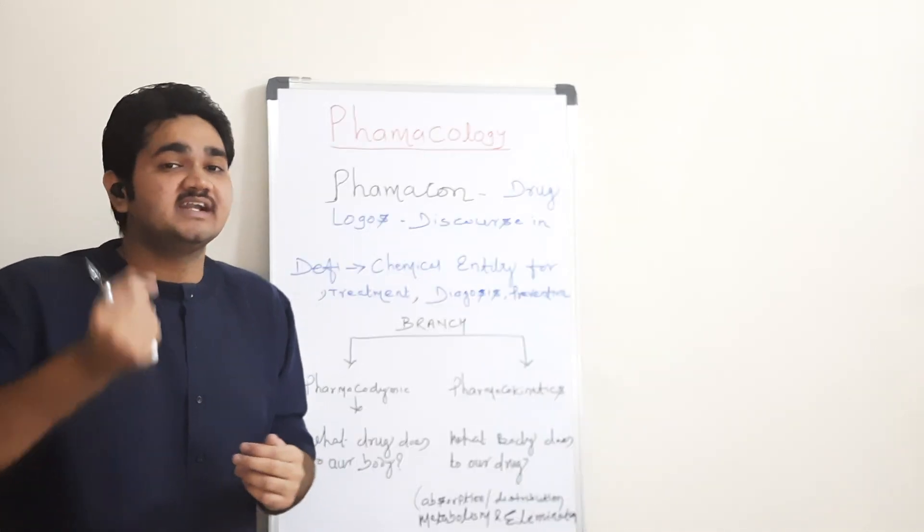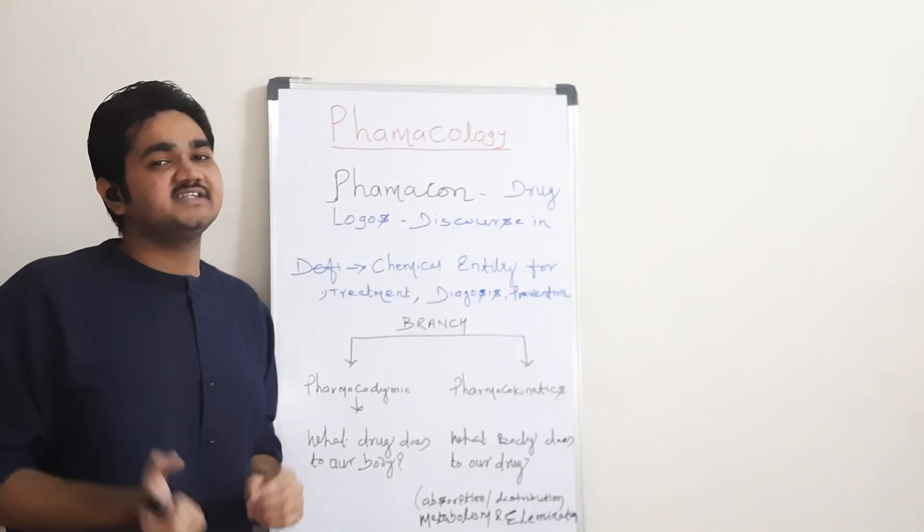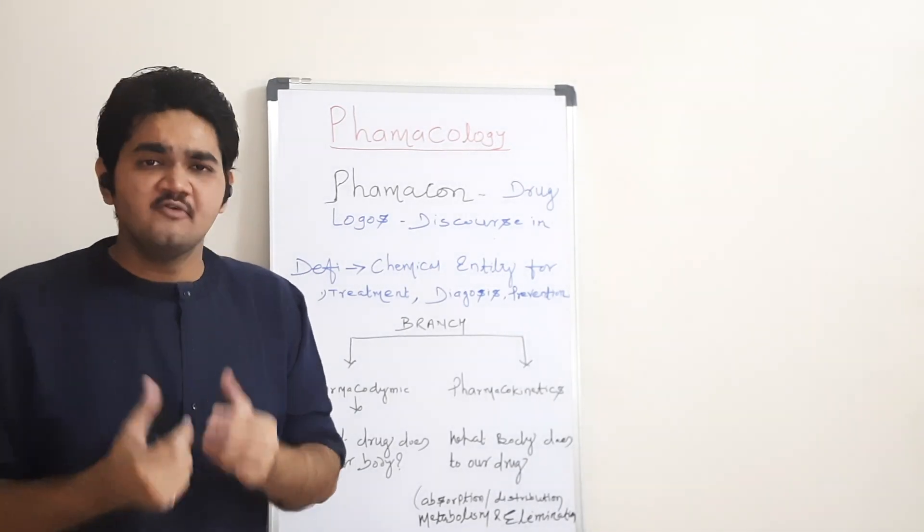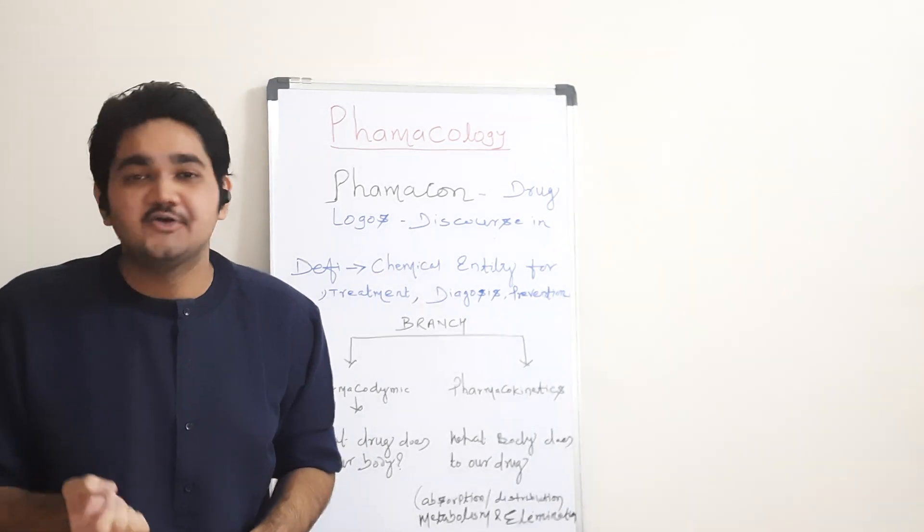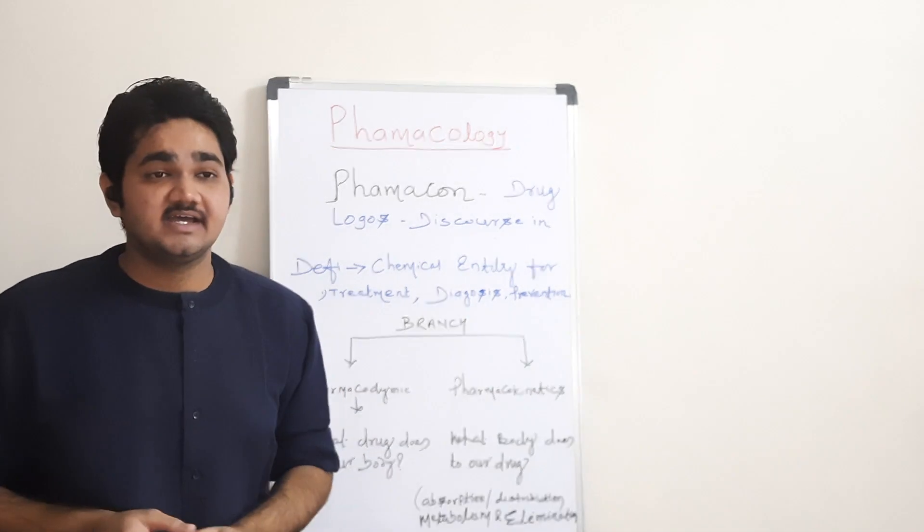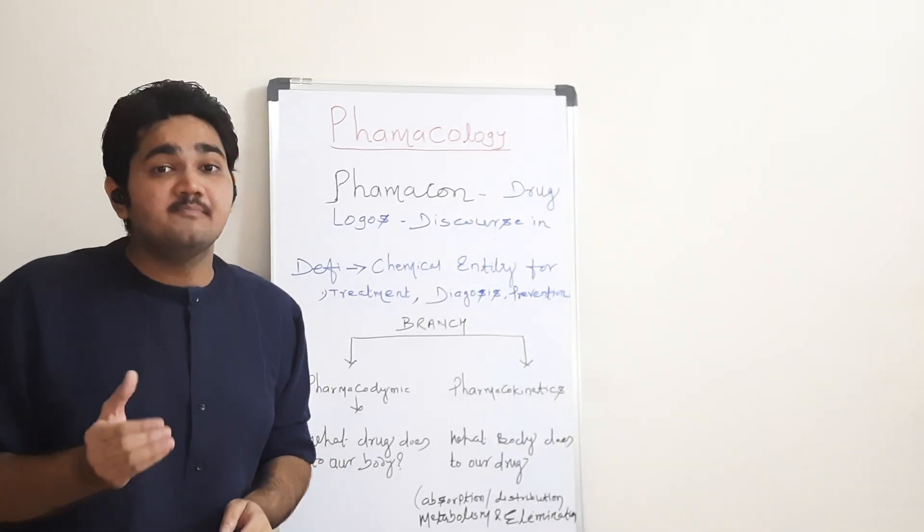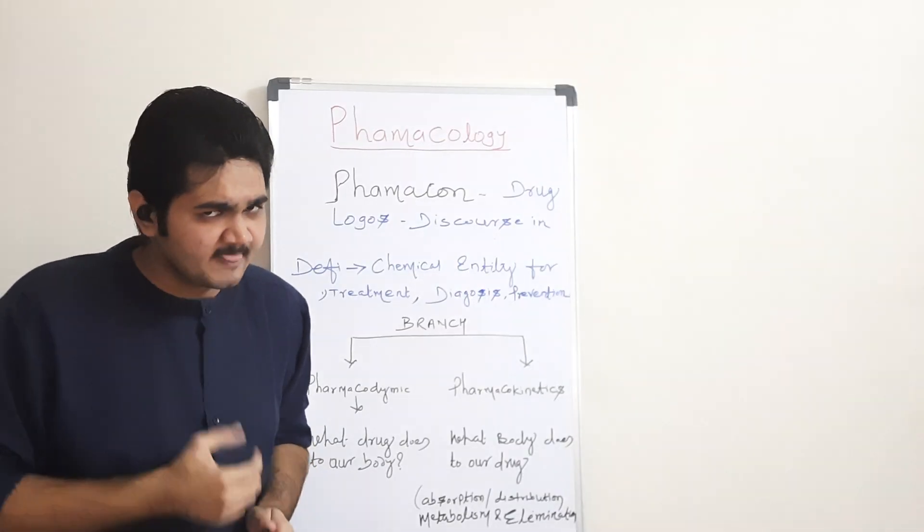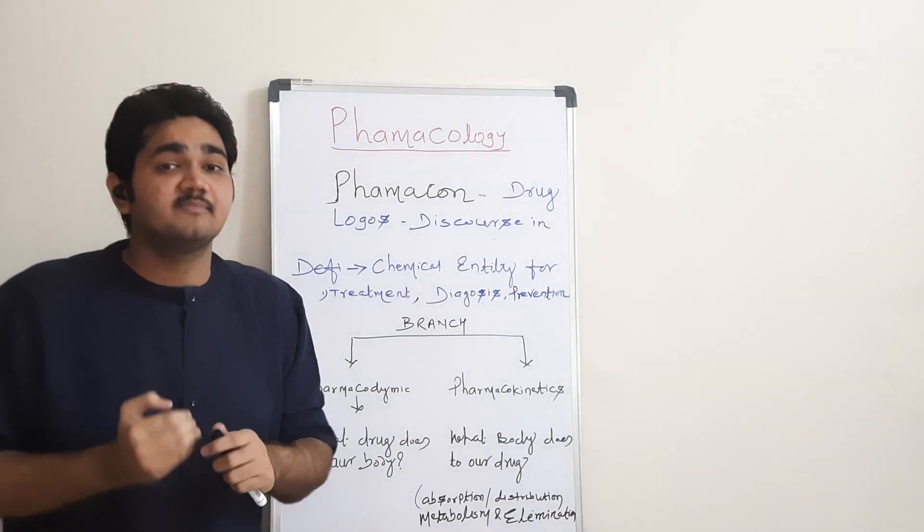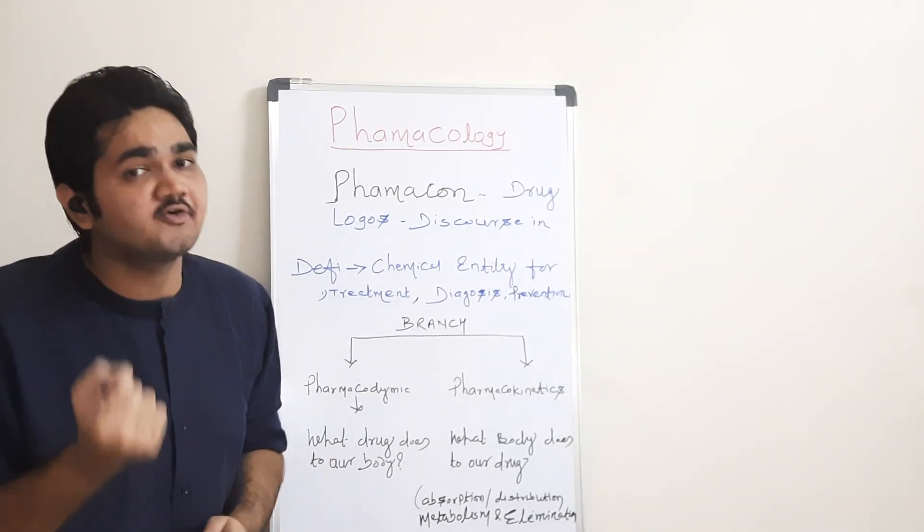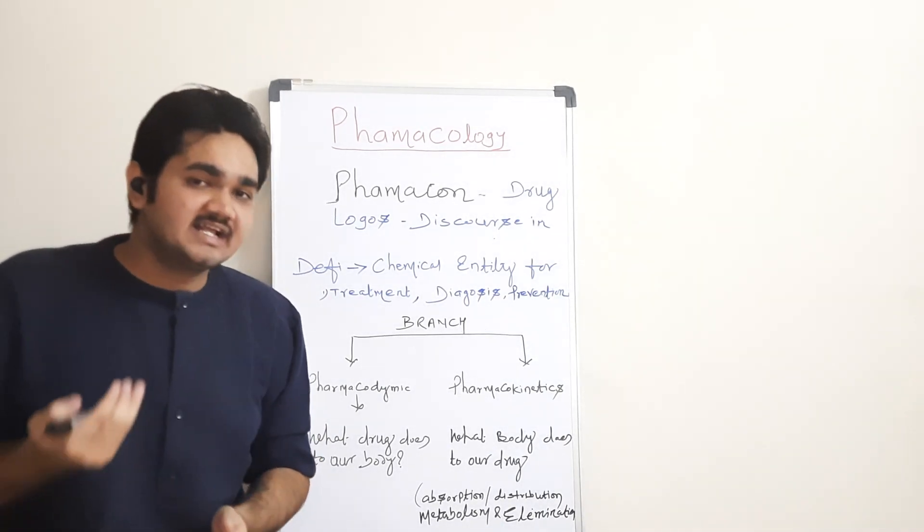When we deal with that chapter, all the general pharmacology related concepts - for example, what are the different types of receptors, what is an agonist, what is an antagonist, what do we mean by first pass metabolism, what do we mean by bioavailability, what do we mean by therapeutic index - all these things, when we deal with that chapter, at that time, we will also be dealing with these concepts side by side.